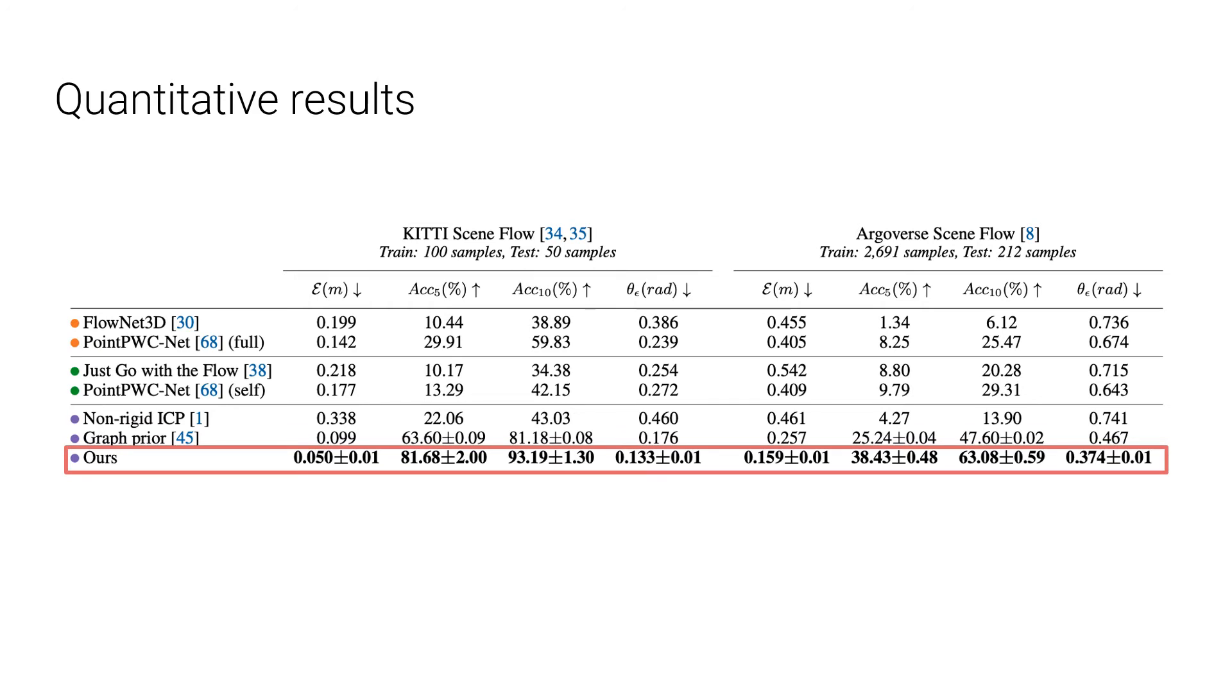For example, the endpoint error of our method is 0.05 meters on the KITTI and 0.159 meters on the Argoverse, which is much lower than other methods. In highlights, the supervised methods lack generalizability when applied to out of distribution data, while our method is robust, generalizing to various datasets.